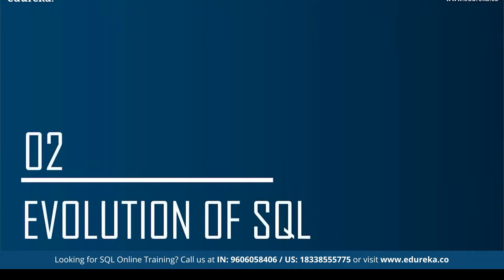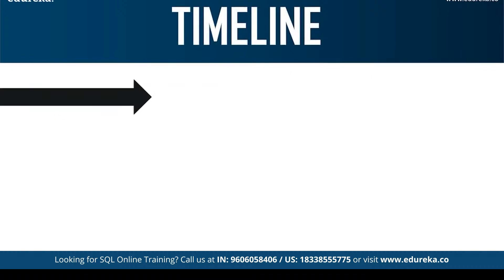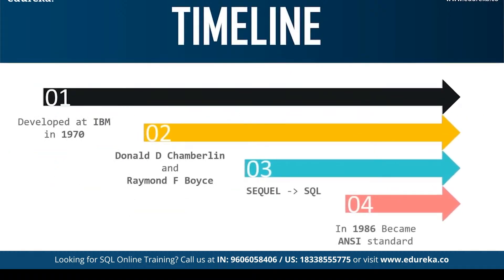Let's now look at the evolution of SQL. SQL was developed at IBM by Donald D. Chamberlain and Raymond F. Boyce in the early 1970s. It was initially called SEQUEL, that is Structured English Query Language, but later it was changed to SQL because SEQUEL was a trademark of a UK-based engineering company. In the year 1986, the American National Standards Institute (ANSI) and the International Standards Organization (ISO) deemed SQL as a standard language in relational database communication.